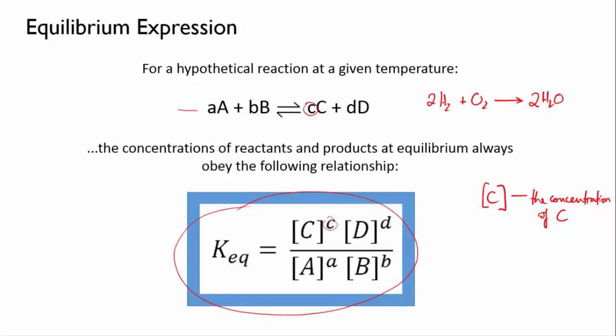This expression will then always equal a particular constant, which is called the equilibrium constant, or Keq. A given chemical reaction will have a particular Keq, and nothing can change this constant except for temperature. So as long as you're performing a reaction at a constant temperature, you can say that at equilibrium, the concentrations of products and reactants will always obey this relationship.